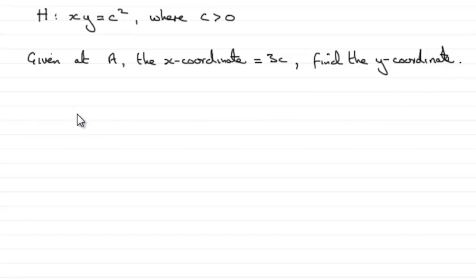So all we need to do is substitute when x equals 3c into our equation. We're going to have 3c multiplied by y equals c squared. We divide both sides by c and divide by 3, and we end up with y equals c over 3.